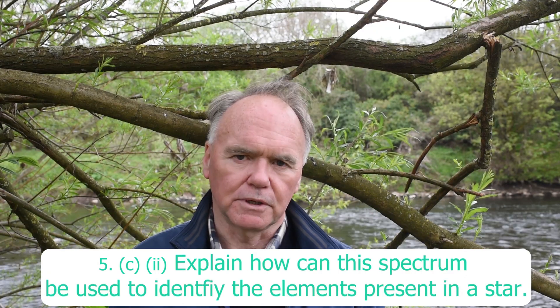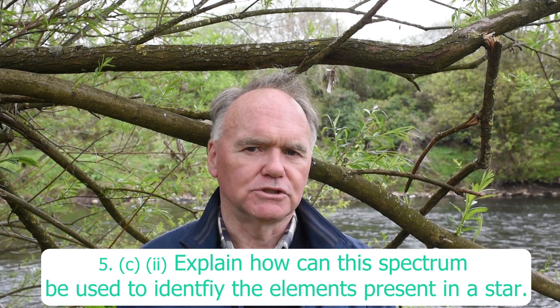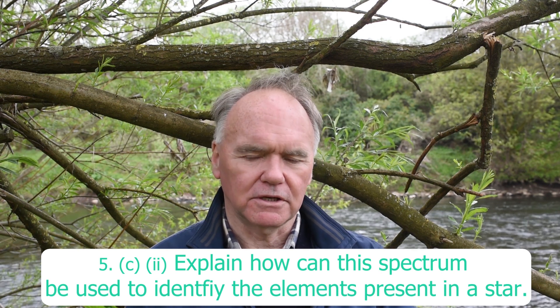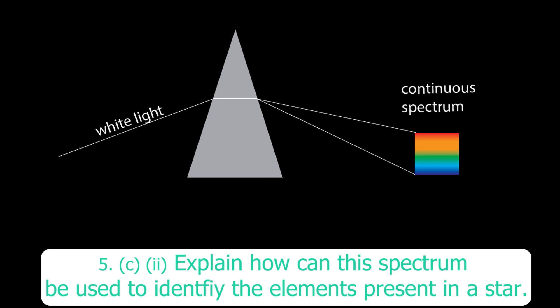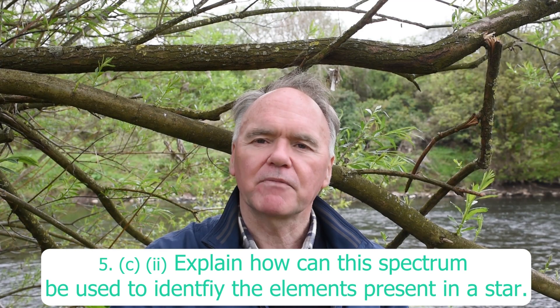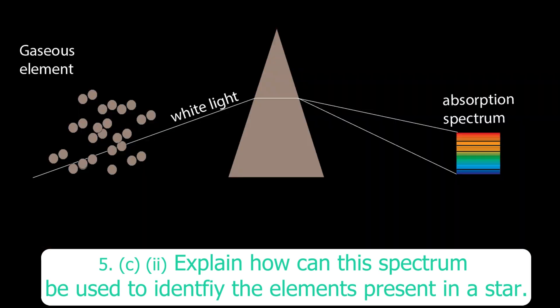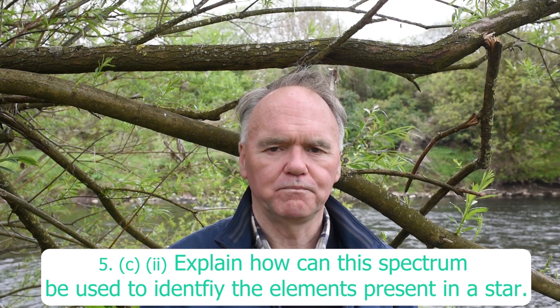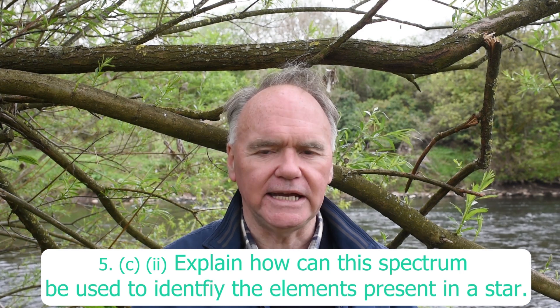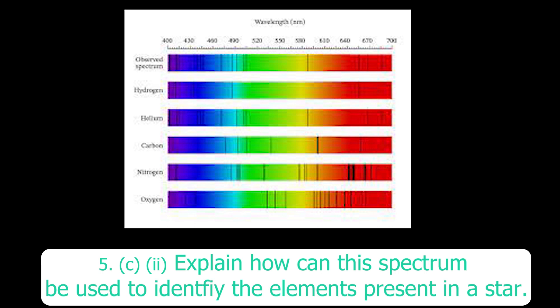The last question asks how an absorption spectrum enables us to identify elements present in stars. A beam of white light striking a prism produces a full spectrum of colours. If a gaseous element is introduced into the path of the light, that element will absorb certain colours, which appear as blank or black lines in the final spectrum. Since we know which colours are absorbed by each gas, by comparing our starlight spectrum with known absorption patterns, if they match, we can identify the element present in the star's atmosphere. That's how we use absorption spectra to identify elements in stars.